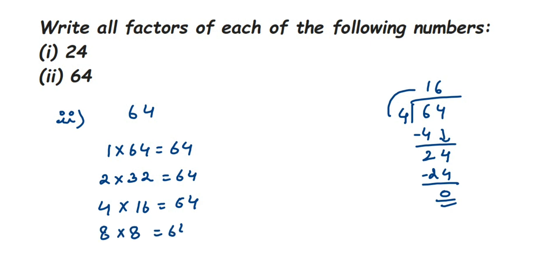It doesn't go in the 9 table, neither in the 10 table. That's it, so we can stop here. So write down the factors of 64. Like I said for the previous question, it's 1, 2, 4, 8, 16, 32, and 64.